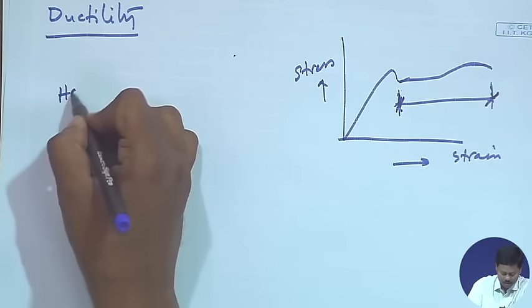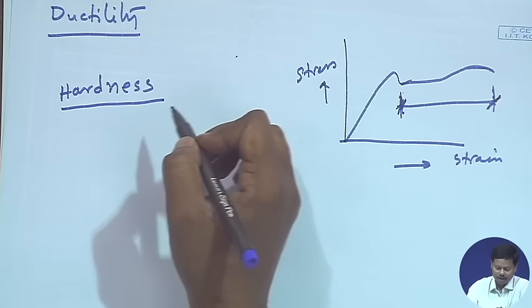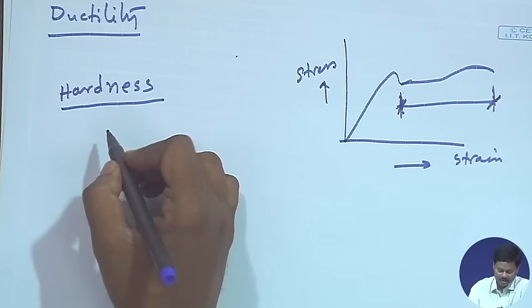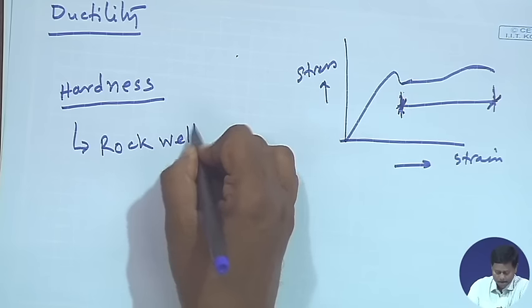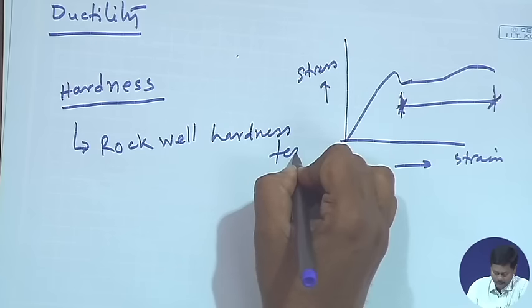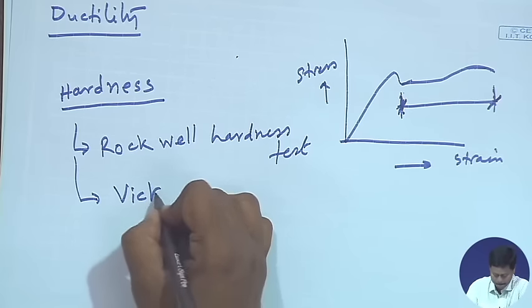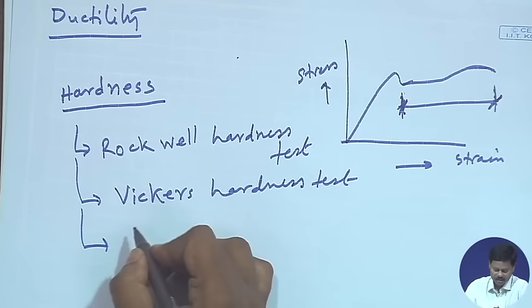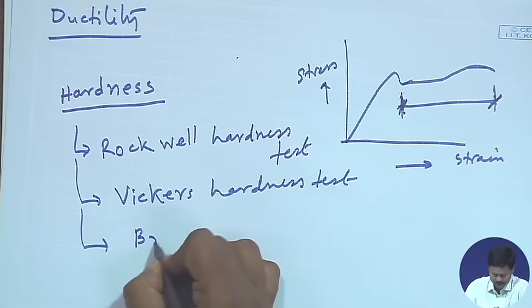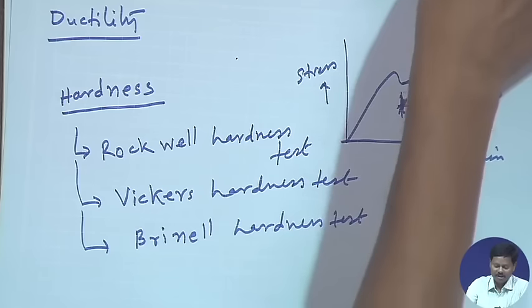Another mechanical property is hardness — it is the property by virtue of which a material offers resistance to indentation and scratching. Hardness can be measured by different tests: the Rockwell hardness test, the Vickers hardness test, and the Brinell hardness test.